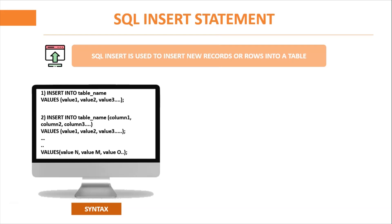The second method specifies both the column names and the values you want to insert. The syntax is INSERT INTO, which is the keyword, followed by the table name. Within the brackets, you mention the columns, then the VALUES keyword followed by value1, value2, value3, and so on up to your requirement.